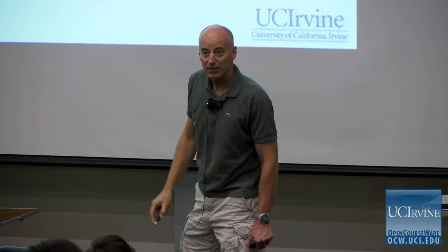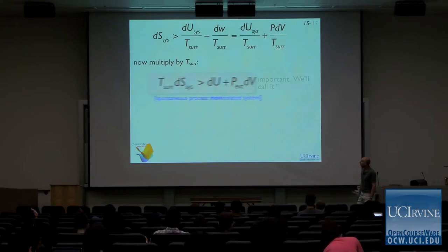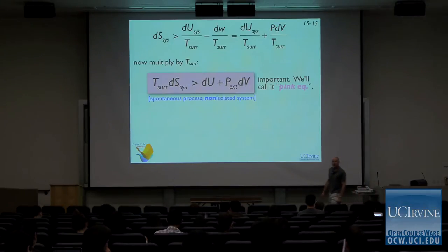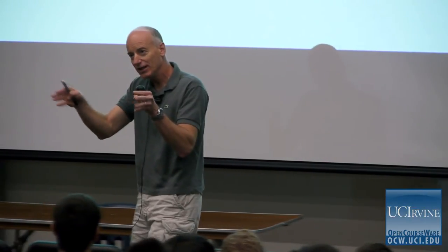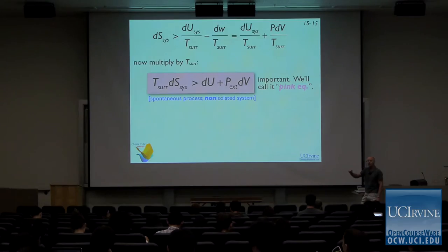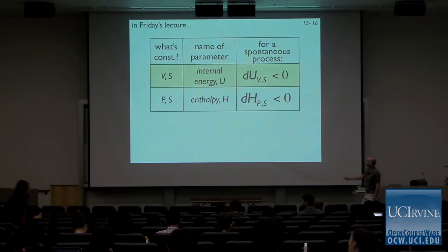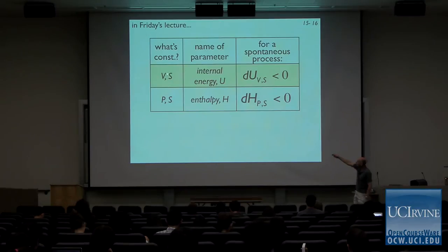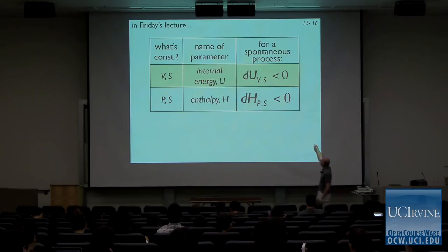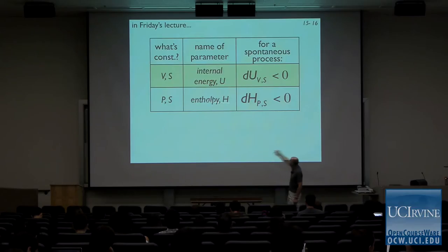If you don't see a subscript, just assume we're talking about the system. So this is the pink equation. It only took us about four steps to get there — from entropy dictating which process is spontaneous or not. We kept coming back to this pink equation on Friday and deriving different thermodynamic state functions from it. We showed that if the process occurs under conditions of constant volume and constant entropy, then it's the internal energy that tells us whether the process is spontaneous or not. And if the process occurs under conditions of constant pressure and entropy, it's the enthalpy that tells us whether the process is spontaneous.